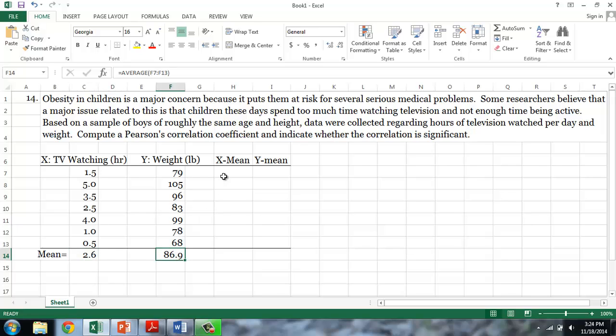The next thing I'll do is calculate the deviation scores, which is equal to the individual score minus the mean number of TV hours watched. Because I want to copy this formula for the rest of the cells, I need to put dollar signs after the C and the 14 to tell Excel not to move from the cell containing the mean. Now I can click and drag and copy these scores into the remaining cells.